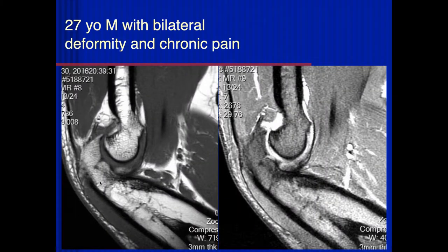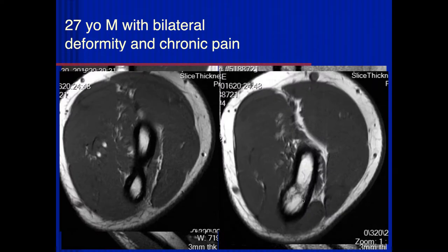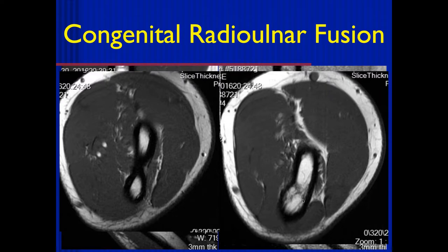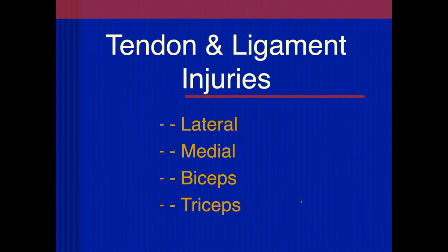Repetitive trauma. Jennifer, what do you think of this case? He has bilateral deformity and chronic pain. It looks like there's chronic-appearing deformity of the proximal radius and ulna fused together — this is congenital radial-ulnar fusion, also called synostosis. The patient had it bilaterally. Let's go on and talk about tendons and ligaments, going from lateral to medial, biceps, and then triceps.